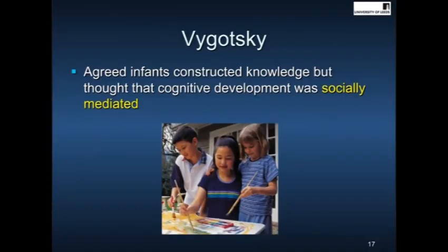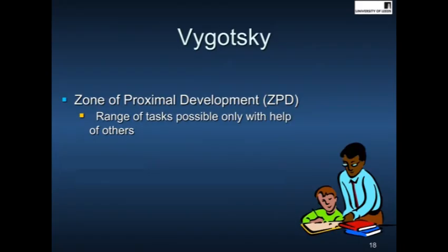The key thing that Vygotsky brought to us was the idea that although he agreed with Piaget that knowledge was constructed through interacting with the world, he said that this was also through social interaction with our peers. So he introduced the idea that the social world of the child is just as important. And there are two key concepts to come from this, and one is called the zone of proximal development.